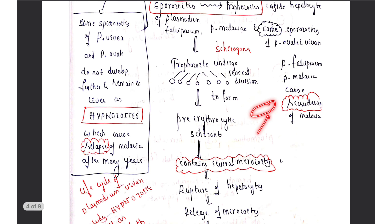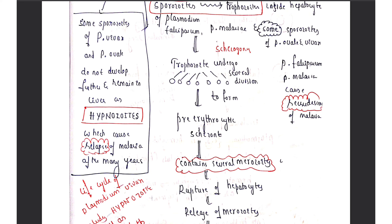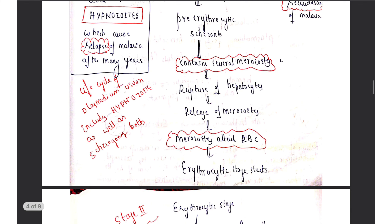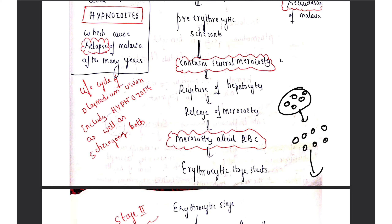The trophozoite has undergone several divisions to form merozoites inside the hepatocyte — this is called the pre-erythrocytic schizont. It contains several merozoites. Once rupture of the hepatocyte occurs, the merozoites are released into the bloodstream. Once released into the bloodstream, they go and directly attack the RBCs.